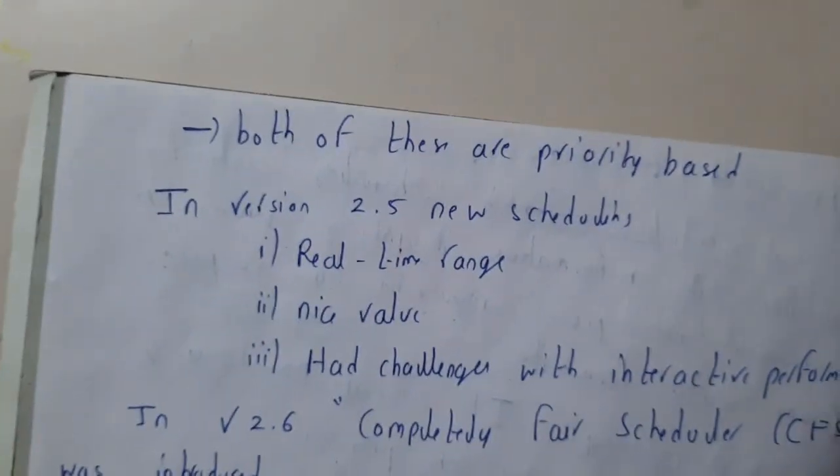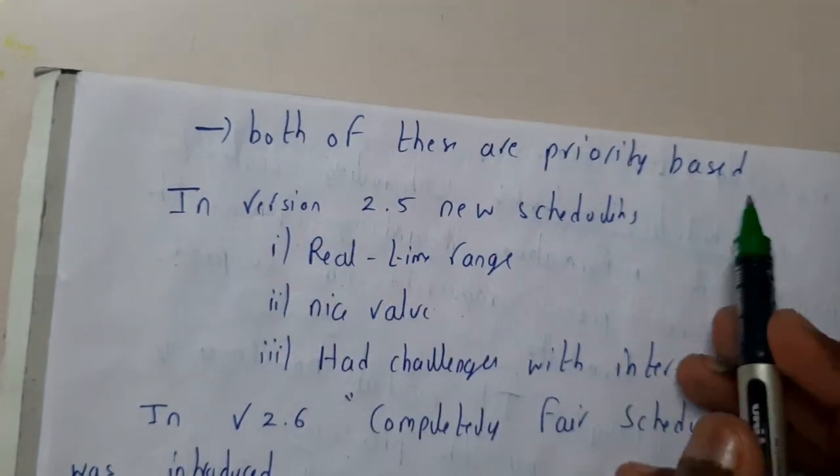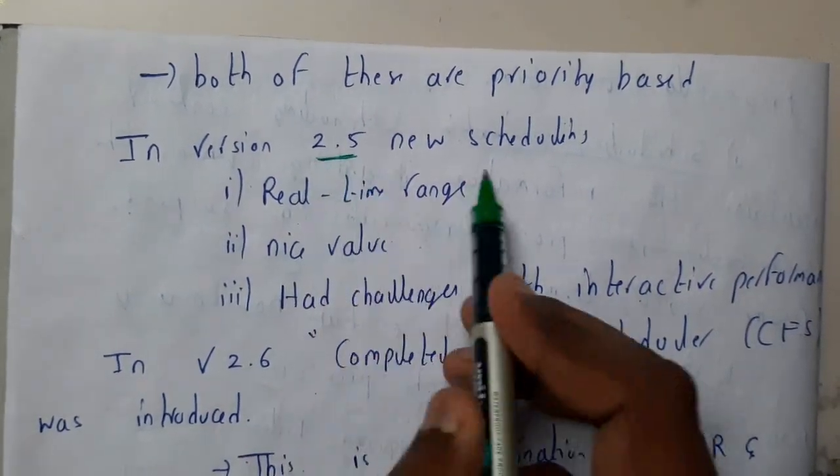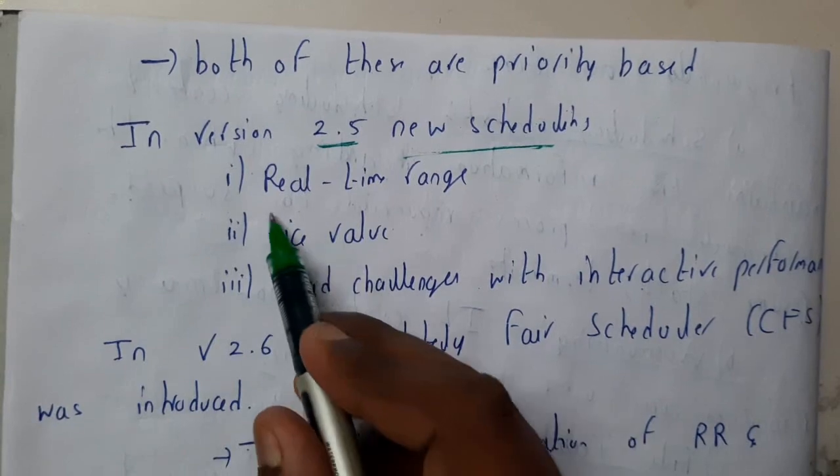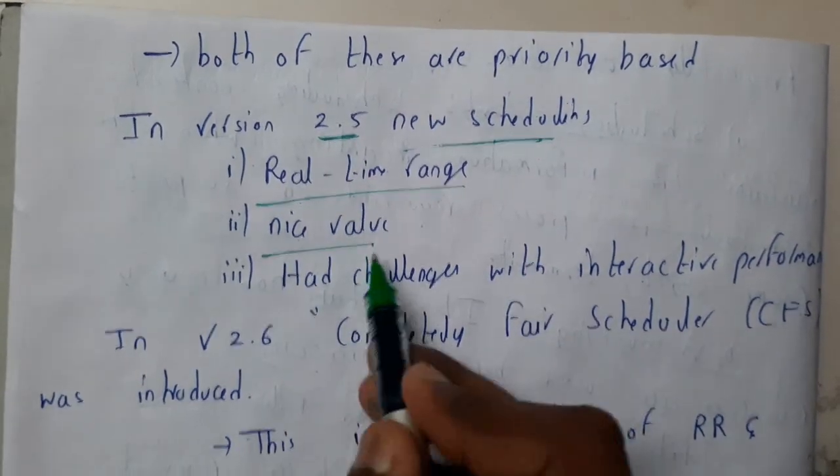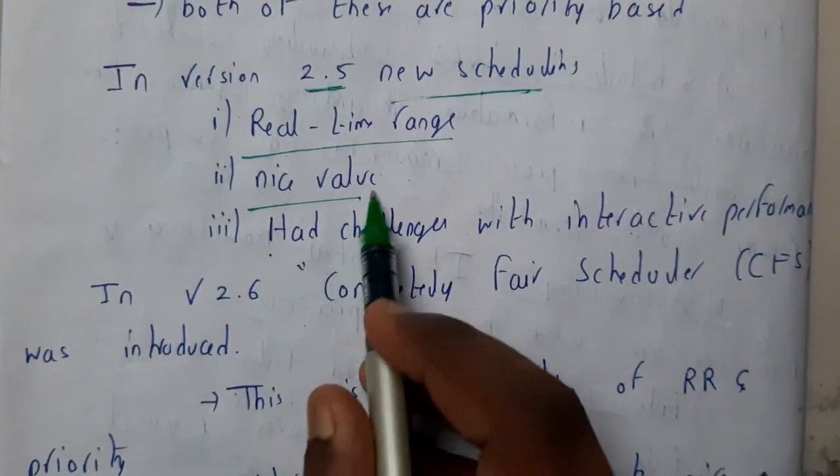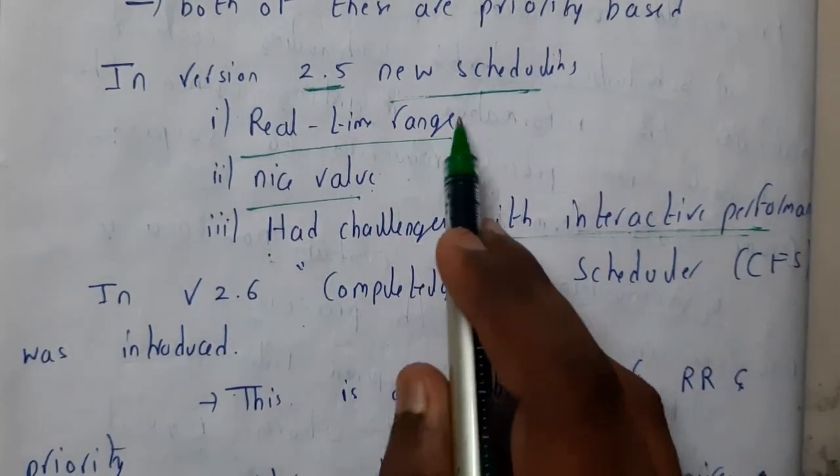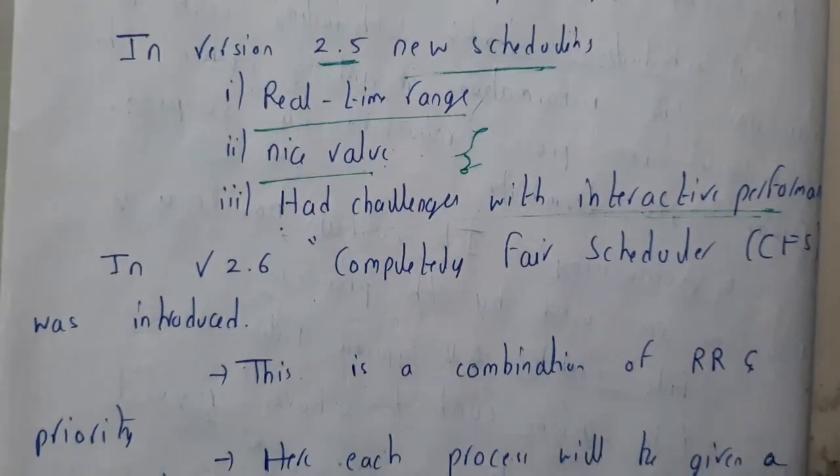Both of these are priority based. Now let us go through the history. In version 2.5, new schedulers have been added, those are real-time range, nice value, and these had challenges with interactive performance. These two had huge problems with interaction.